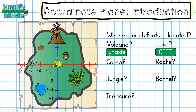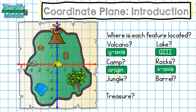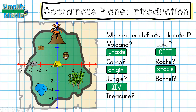My camp is represented by a tent located right in the center of the coordinate plane — remember, that's called the origin. Pause the video and see if you can find where the other features are located. Our rocks are on the red horizontal number line, or x-axis. Our jungle is in quadrant four. My barrel is located where everything is positive, so that's quadrant one. And my treasure chest is in quadrant two.